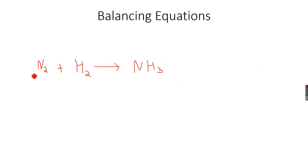We can see that we have two nitrogen atoms on the left side but only one on the right, so this is not possible — both theoretically and practically — because matter is neither created nor destroyed in a chemical reaction. So there have to be two nitrogen atoms on both sides.